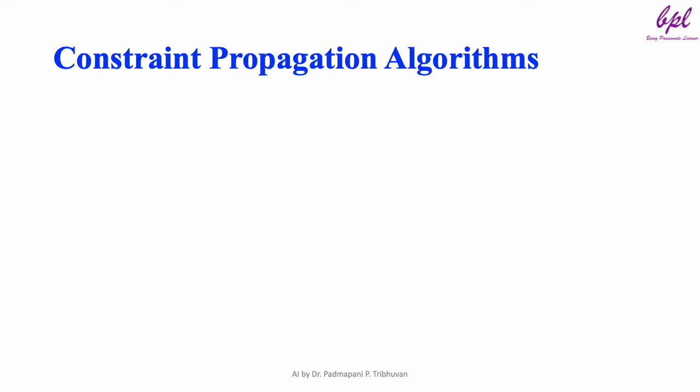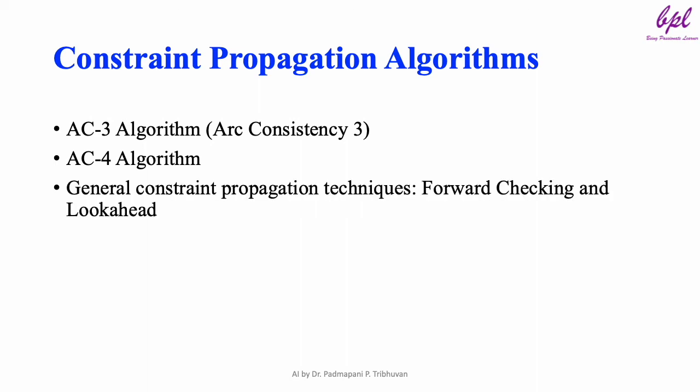Constraint Propagation Algorithms: There are several algorithms designed to implement constraint propagation. The most popular one is AC-3, which stands for Arc-Consistency 3. It repeatedly checks pairs of variables and removes inconsistent values from their domain. There is another algorithm AC-4, which is a more efficient variant of AC-3. There are also general techniques like forward checking and look-ahead for constraint propagation.